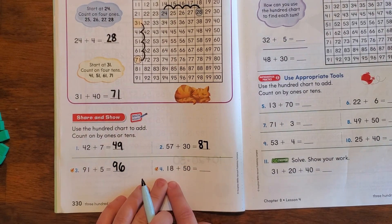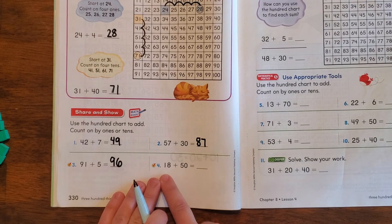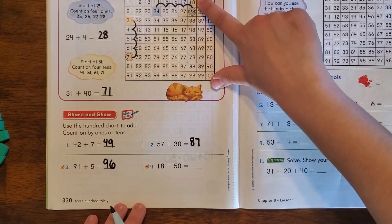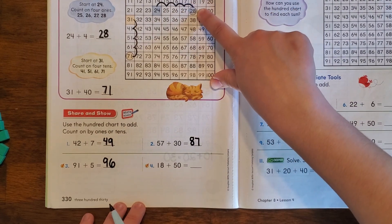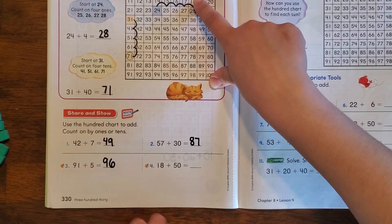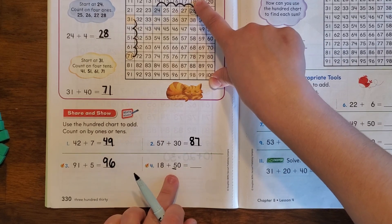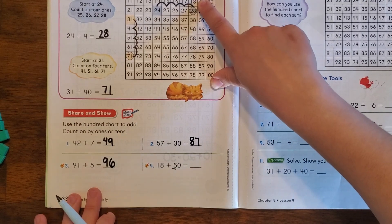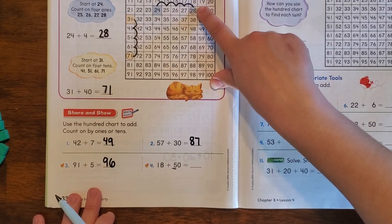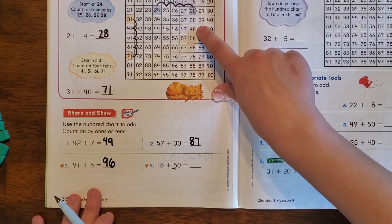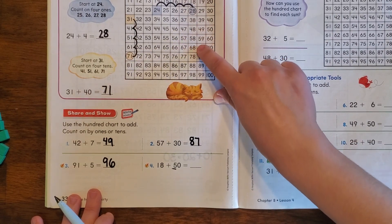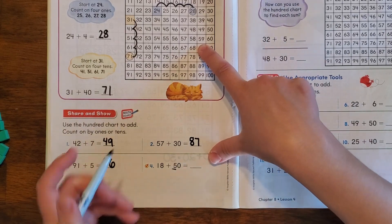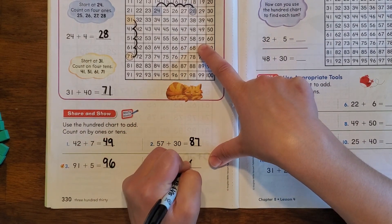And we'll start on the number 18 to do 18 plus 50. If we start on the number 18 here, we know that we can go down one box to add 10. So if we go down 5 boxes to add 50, that will give us 18 plus 50. You can count them with me: 10, 20, 30, 40, 50. So 18 plus 50 more is going to be 68.